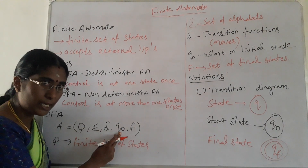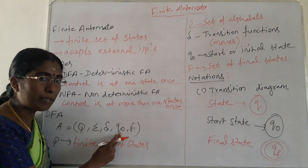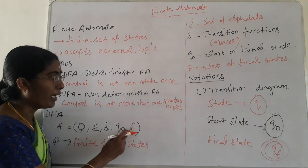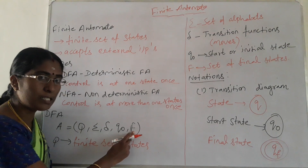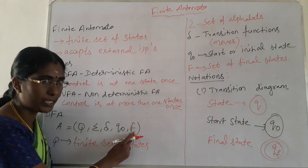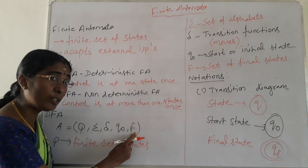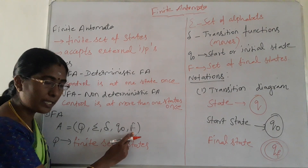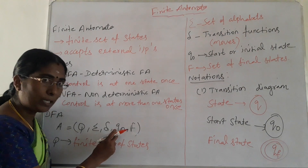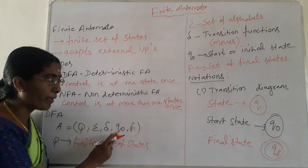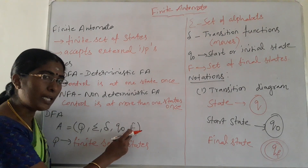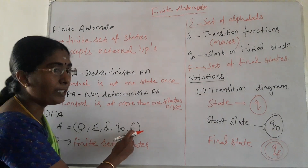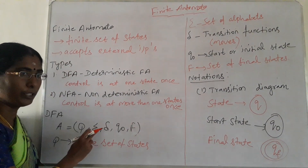Q0 is the start state. For each and every DFA, there must be exactly one start state. And the last component F is the final state — it may consist of a set of final states. So the start state is only one for each DFA, but the final state may be one or more states.